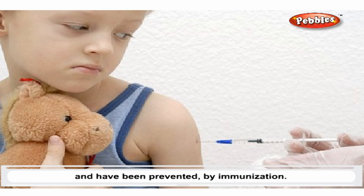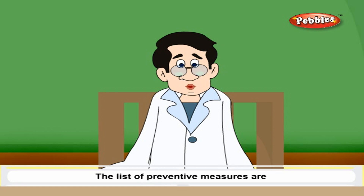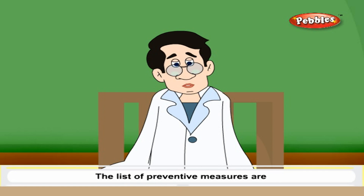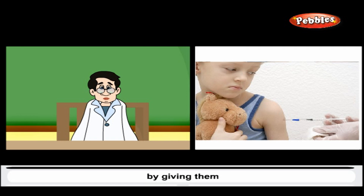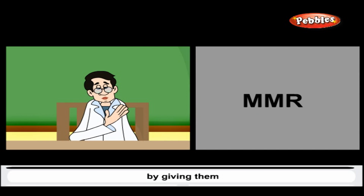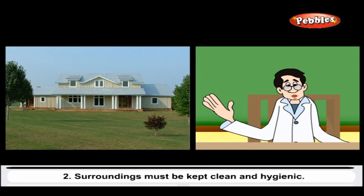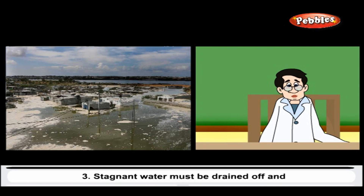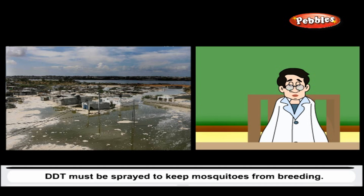All children from newborns to school-going ones must be vaccinated against childhood diseases by giving them BCG, DBT, MMR, and DPT injections. Surroundings must be kept clean and hygienic. Stagnant water must be drained off and DDT must be sprayed to keep mosquitoes from breeding.